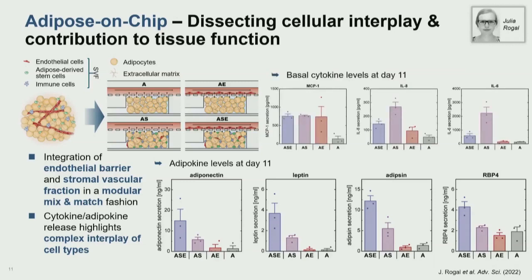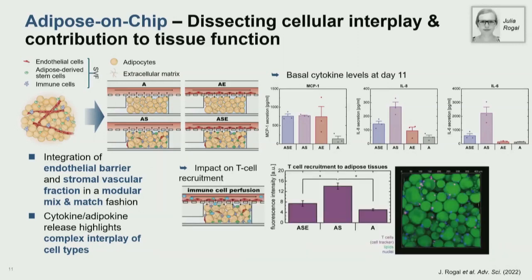The same is the case if we look at other cytokine levels — it obviously depends on whether you have the immune cells in, but the endothelial cells also play a big role in reducing the cytokine levels in your media, which then indirectly impacts the recruitment of T cells. So the complexity of the system really defines the tissue function. It's important to think about what function you want to replicate and what complexity you need.